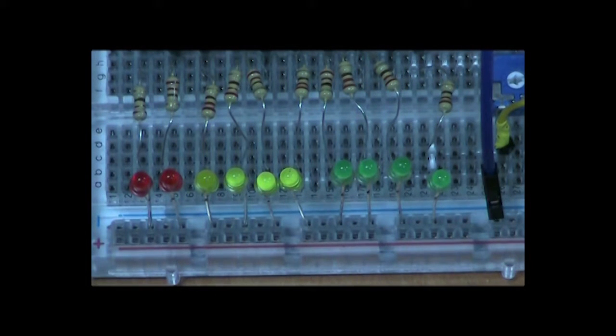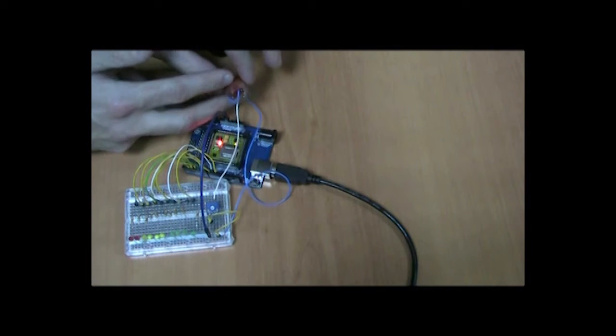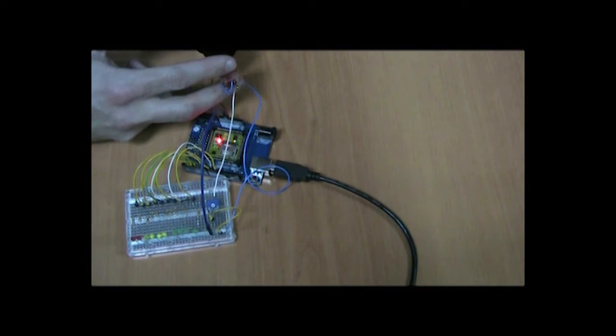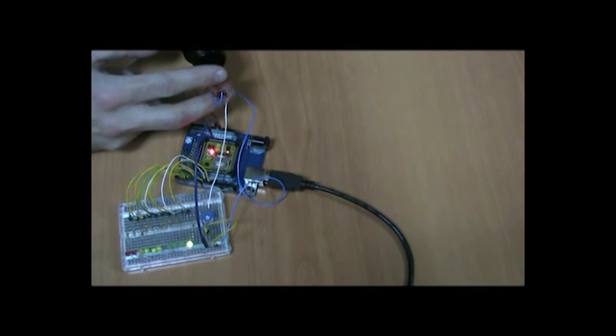A serial resistor in line with the LED limits the current. Now we will make a test with a plastic bottle of beer that blows air into the sensor.